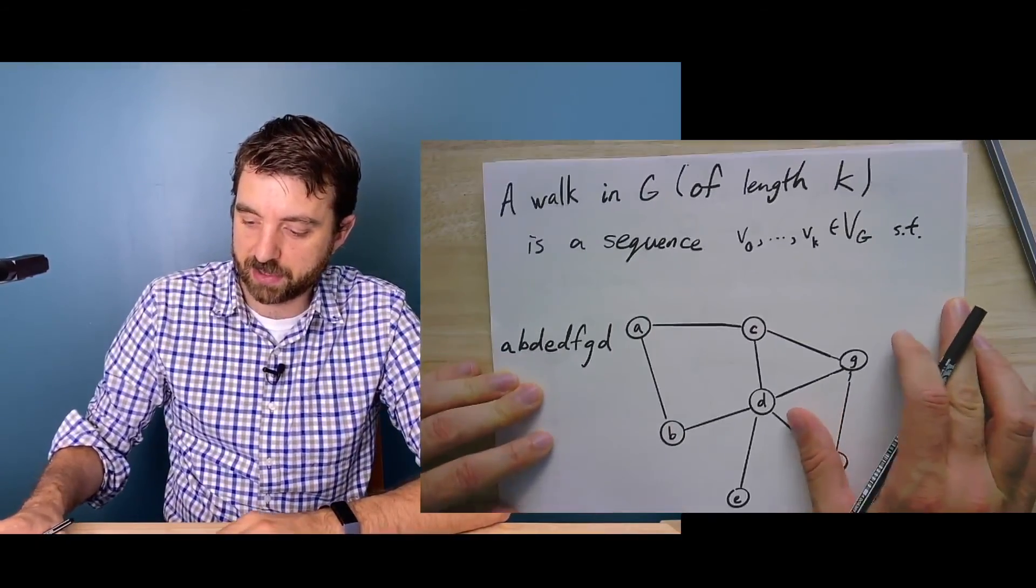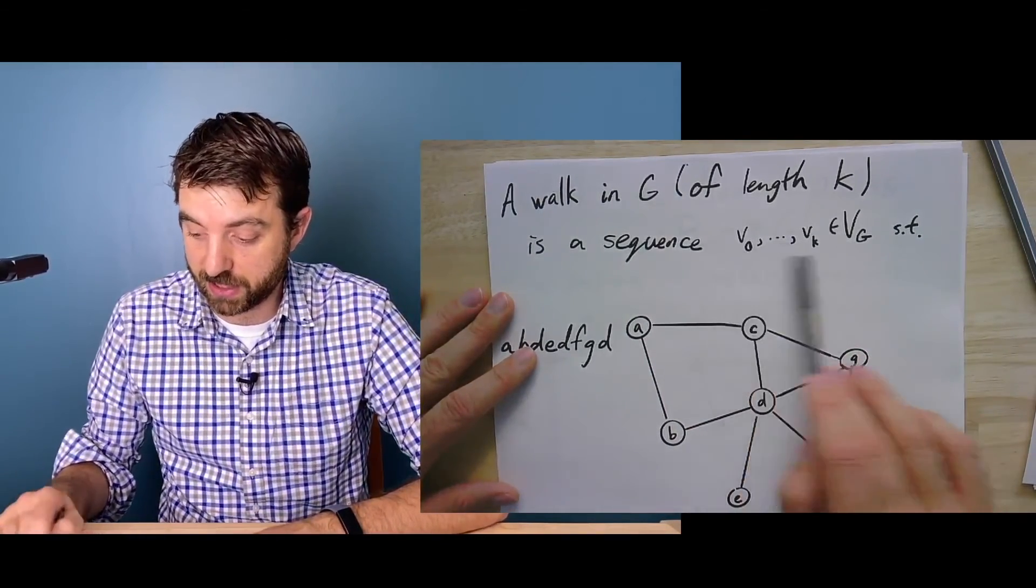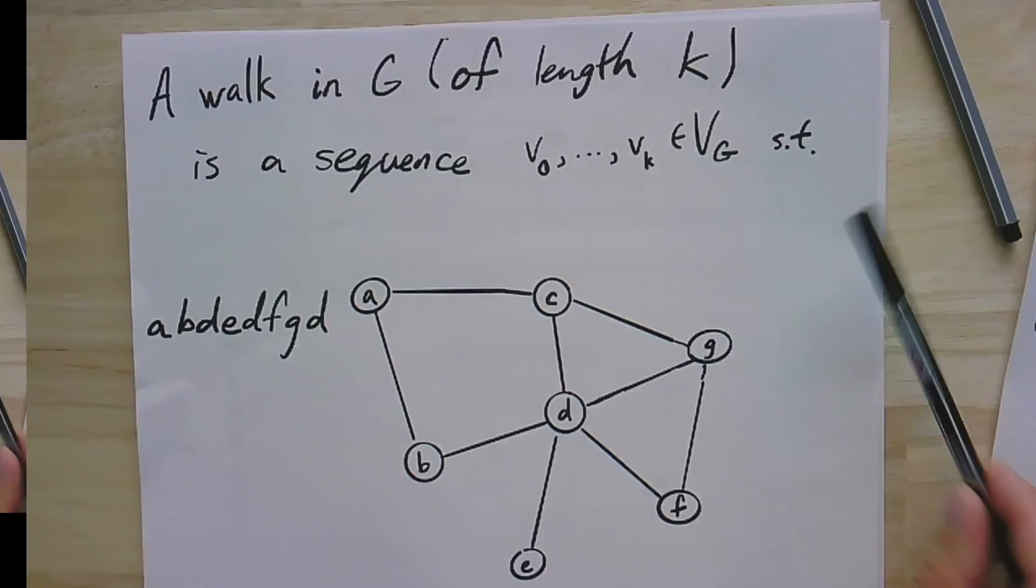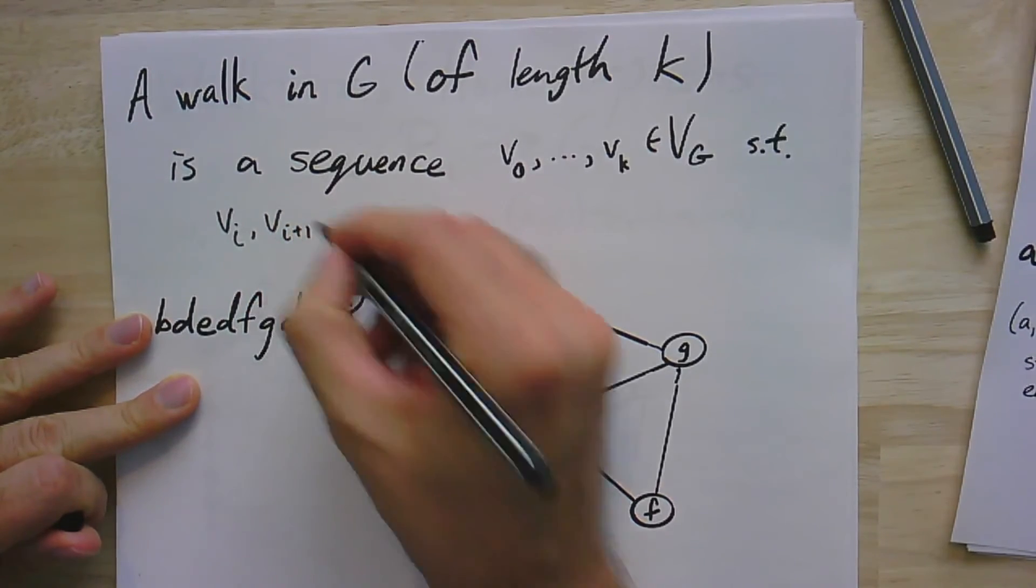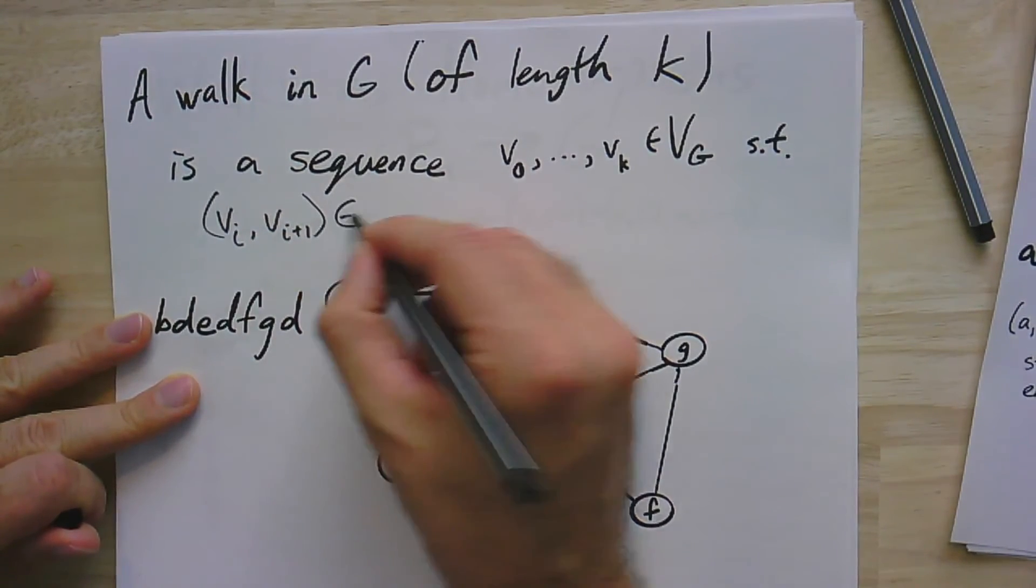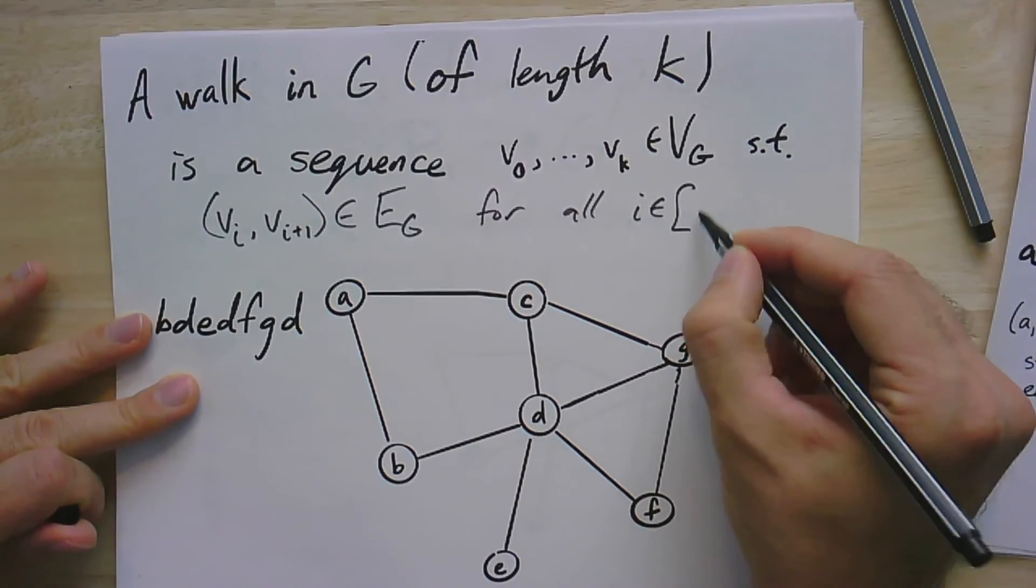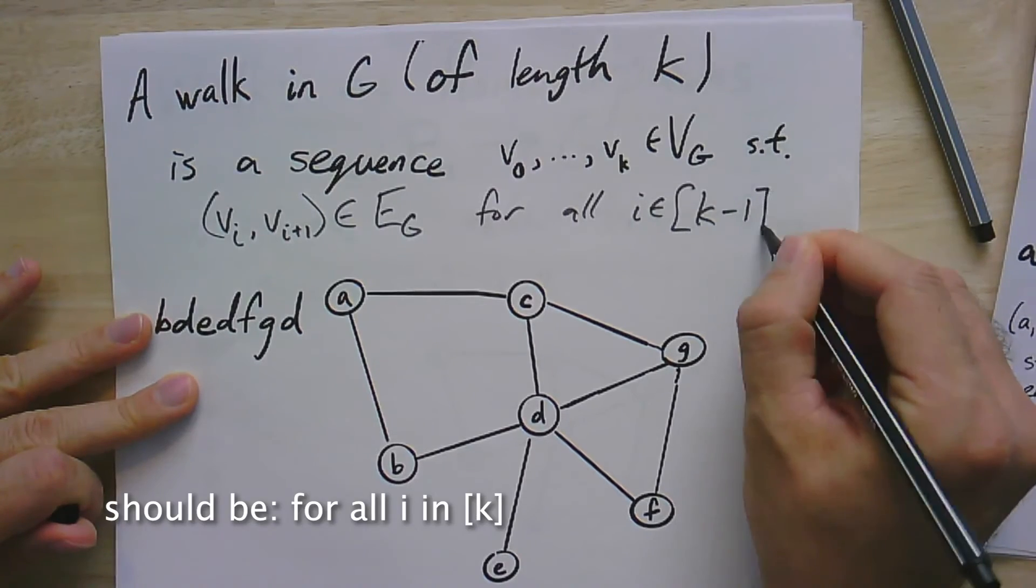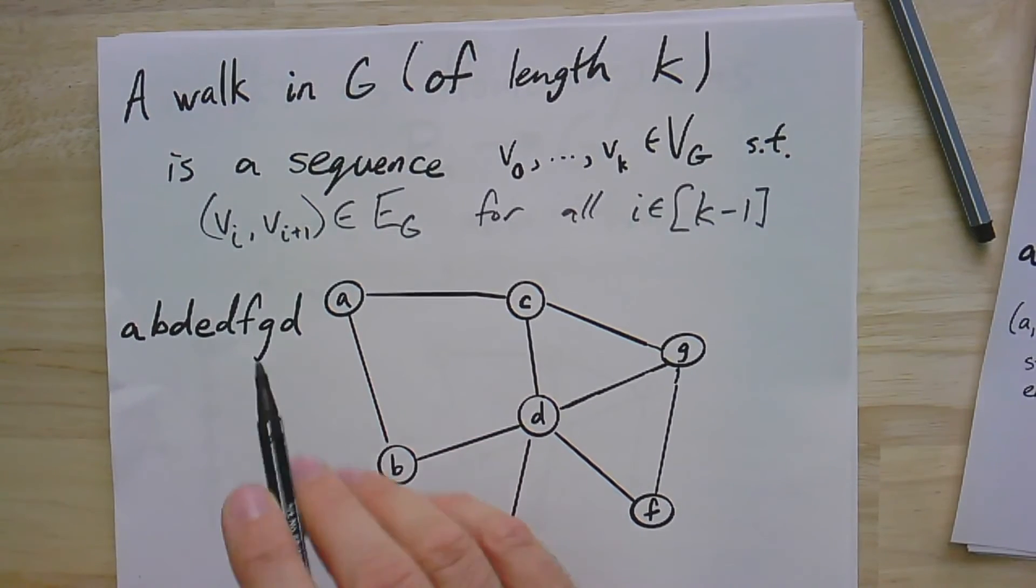A walk in a graph G of length k is a sequence of vertices v0 up to vk. Notice there's actually k plus 1 vertices. The length is the number of edges. It has the property that vi, vi plus 1, this pair has to be an edge in the graph for all i from 0 up to k minus 1. So I go from i to i plus 1, i plus 1 to i plus 2. Each one of these steps in the walk has to be an edge.